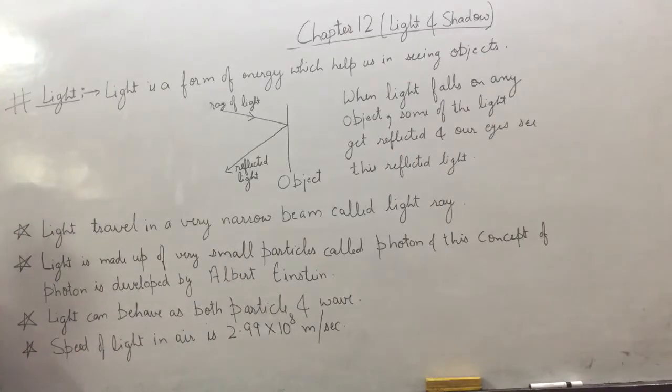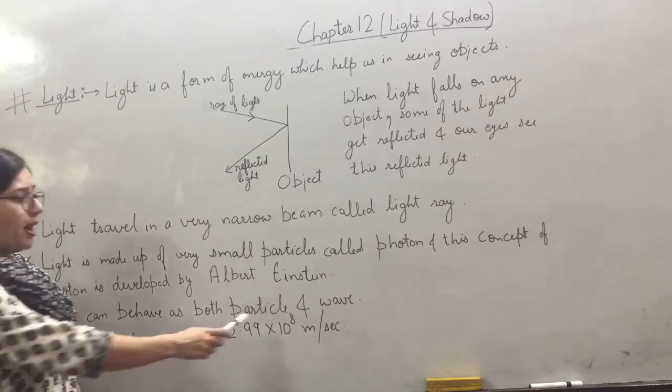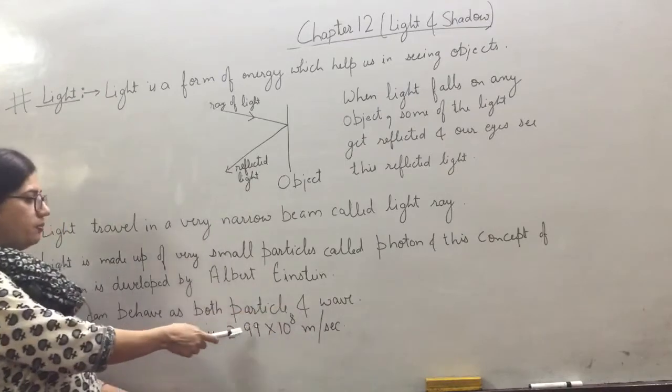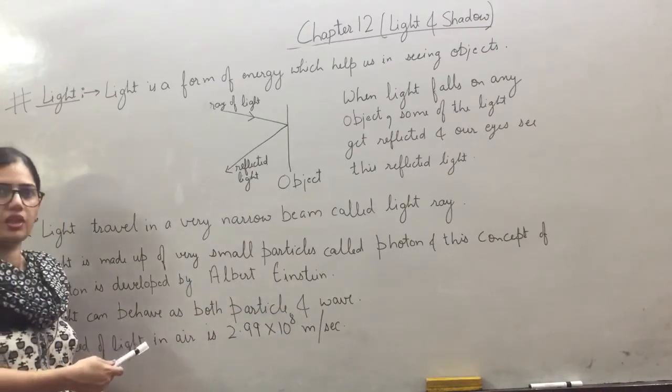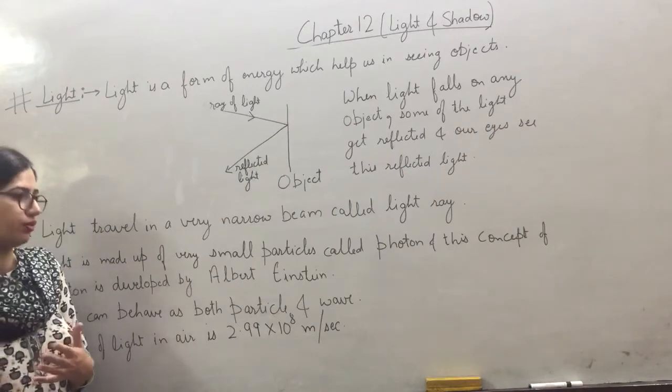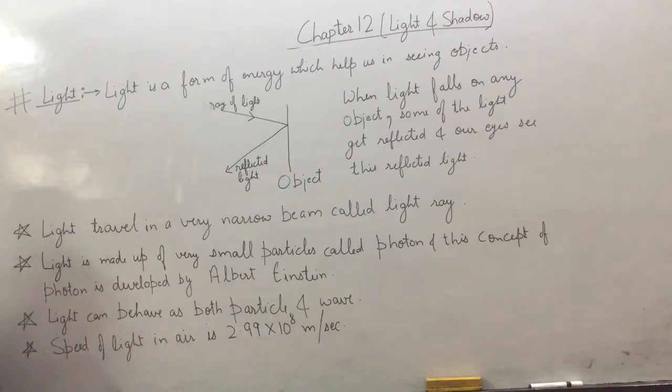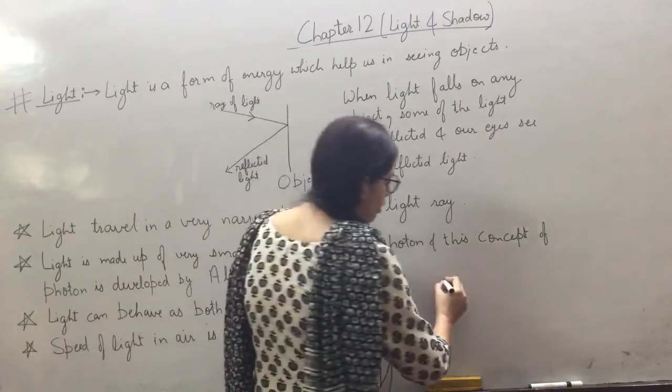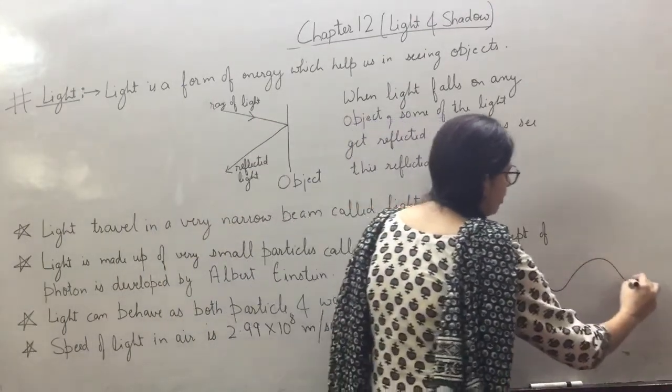Now light can behave as both particle and wave. Light can behave like a particle or it can behave like a wave. Particle - photon is a particle, smallest particle of light. And wave, light normally forms waves like this.